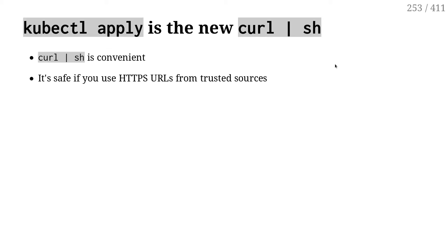Doing kubectl apply on a remote YAML whose provenance is unknown is a little bit like doing curl-pipe-sh on a URL that you don't know.